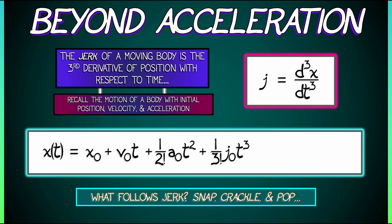That's right. So, your next order term would be 1 over 4 factorial times initial snap times t to the fourth. And we keep going and going. Now,